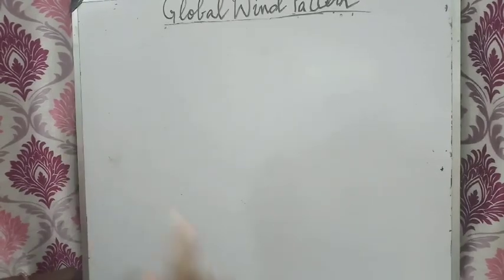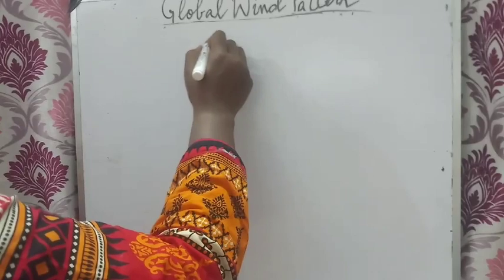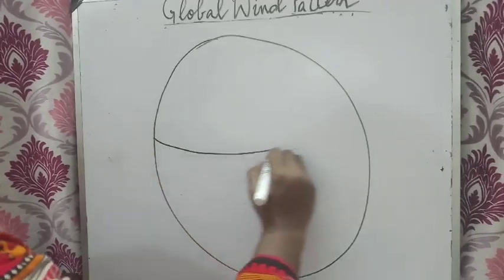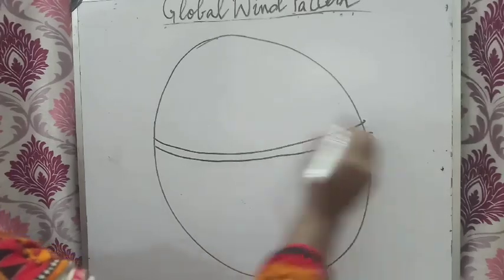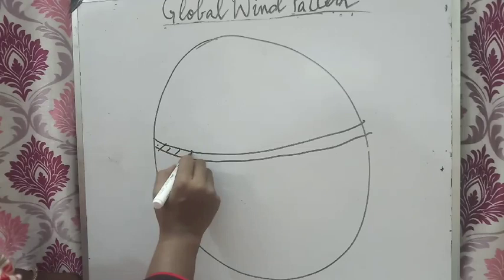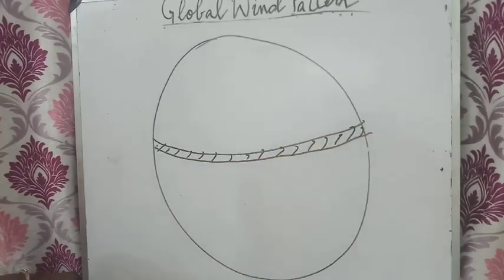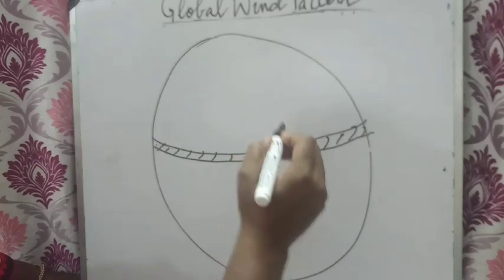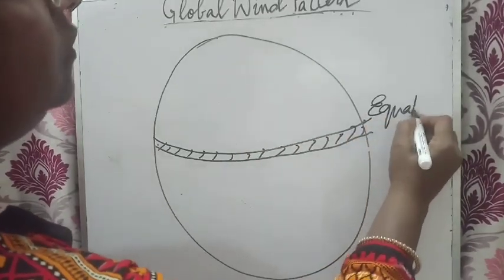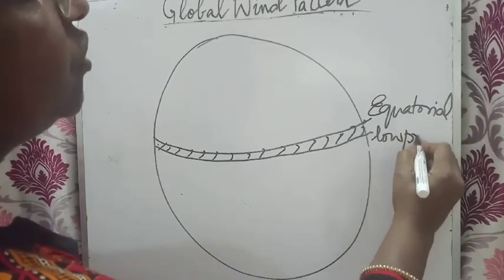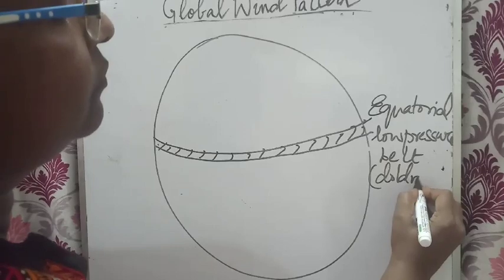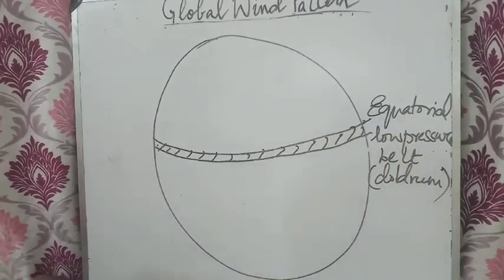Now we will start with permanent winds and how they blow. For that, you have to understand pressure belts. Just see these pressure belts. This is earth, and here is the equator. On the equator, it receives direct heat from sunlight. As a result, the pressure will be low. So it is named the equatorial low pressure belt, also known as the doldrum.